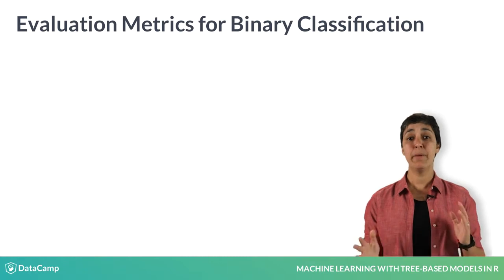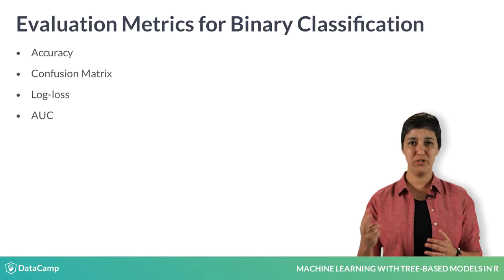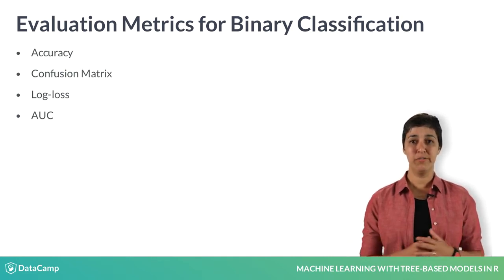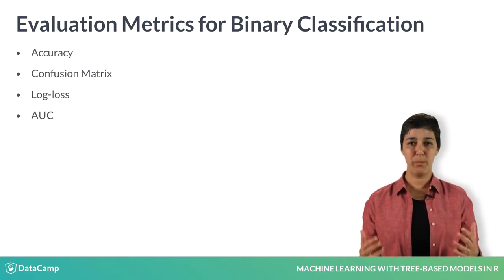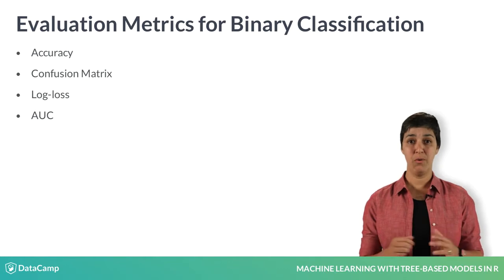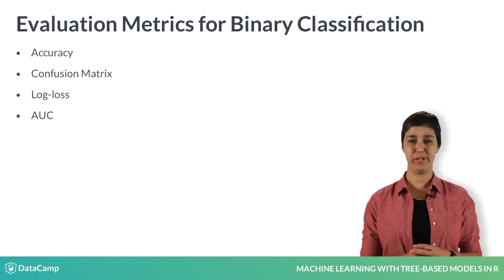There are many ways of evaluating classification performance. Accuracy, confusion matrix, log loss, and area under the ROC curve, or AUC, are some of the most popular metrics for binary classification problems. For now, we'll discuss accuracy and introduce the confusion matrix.